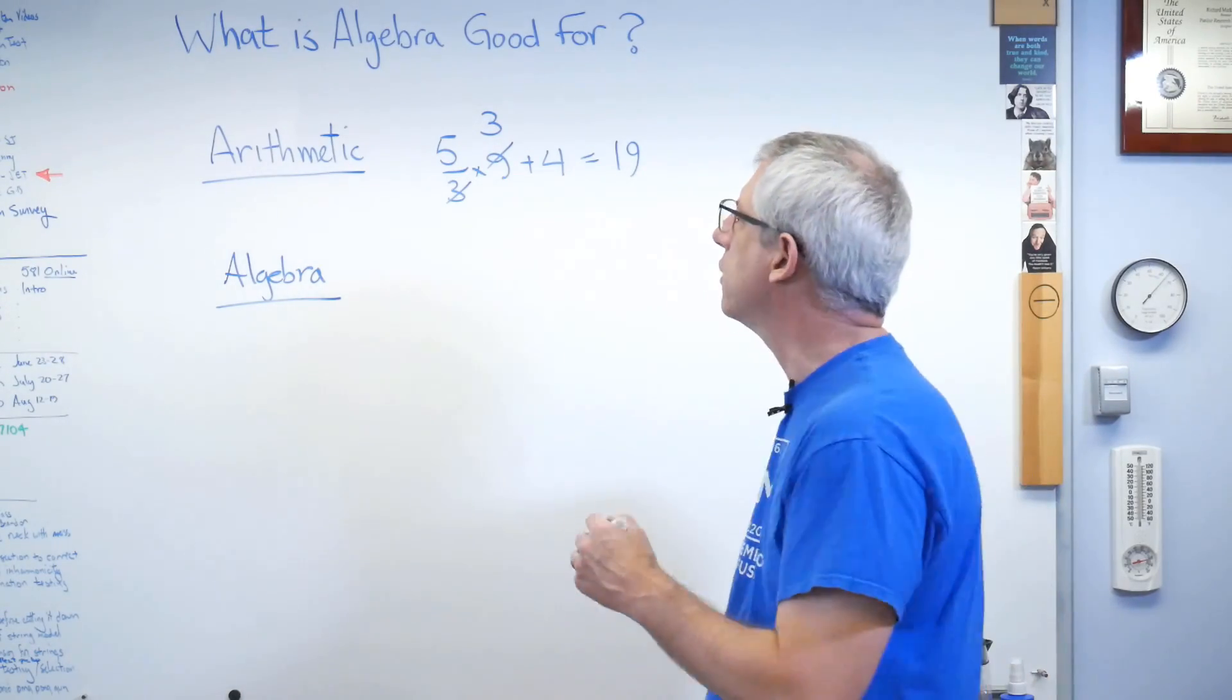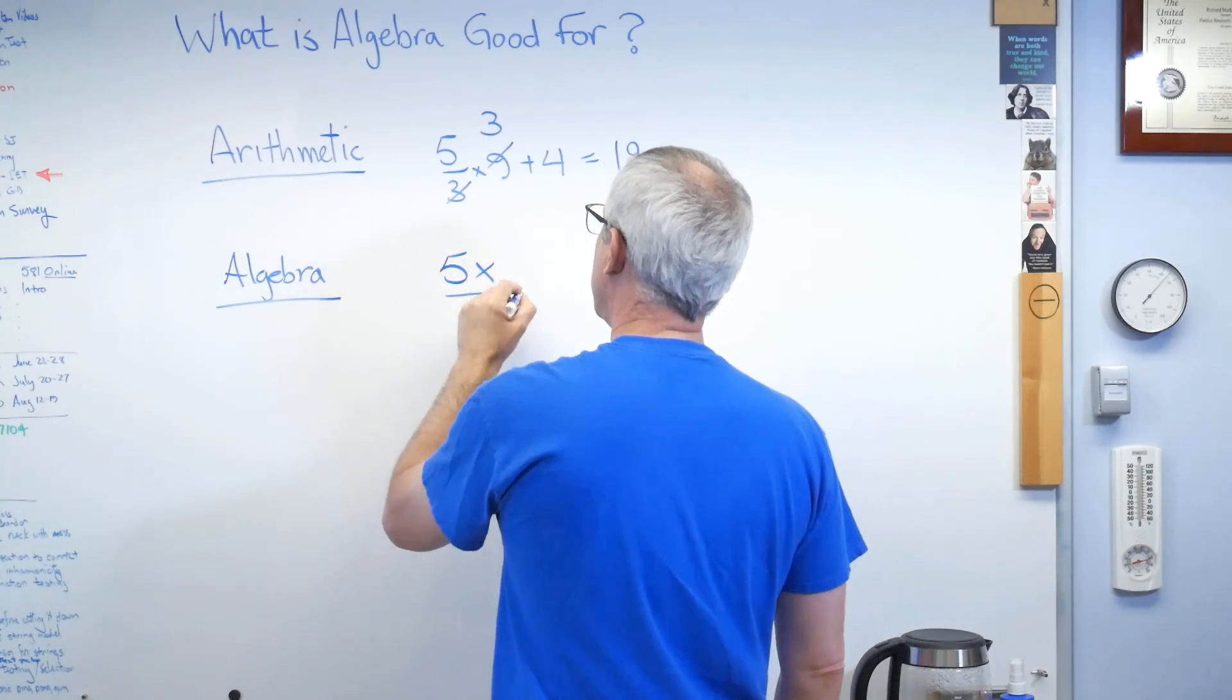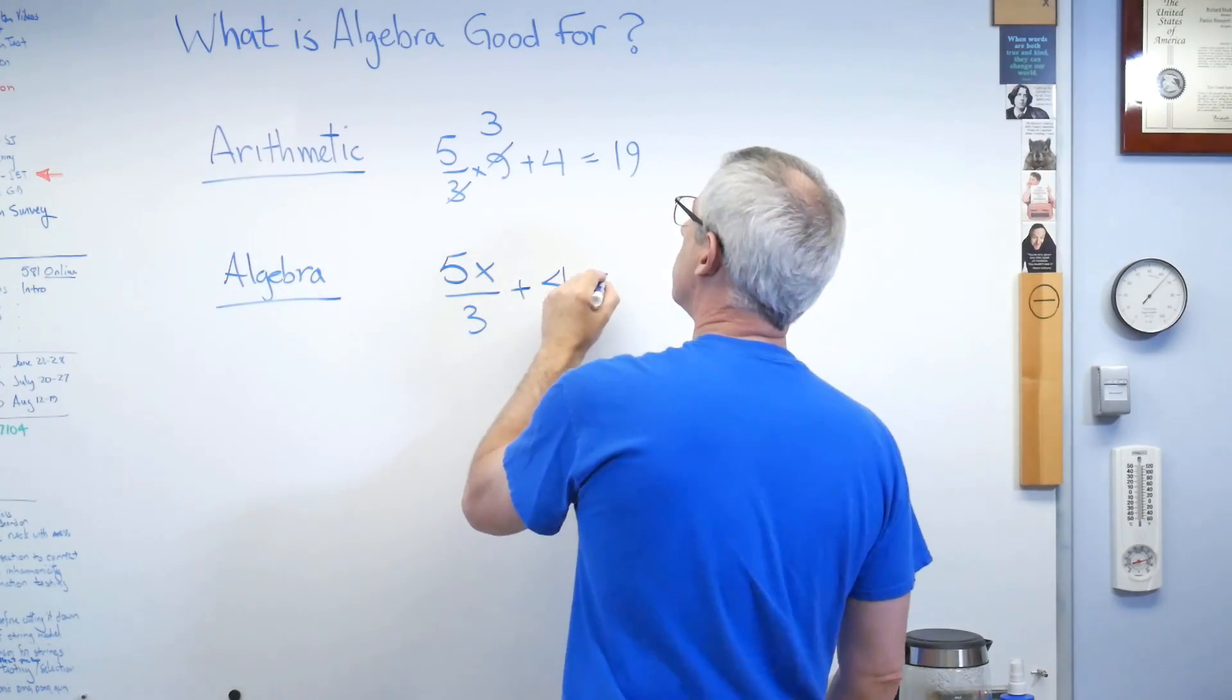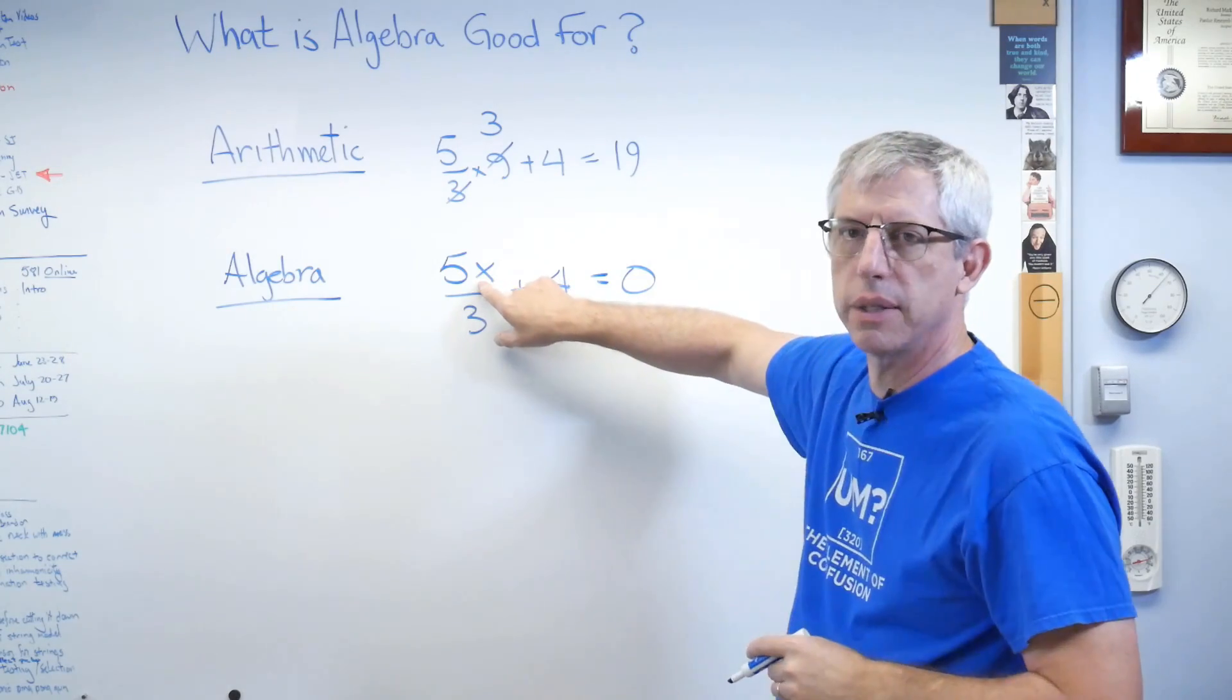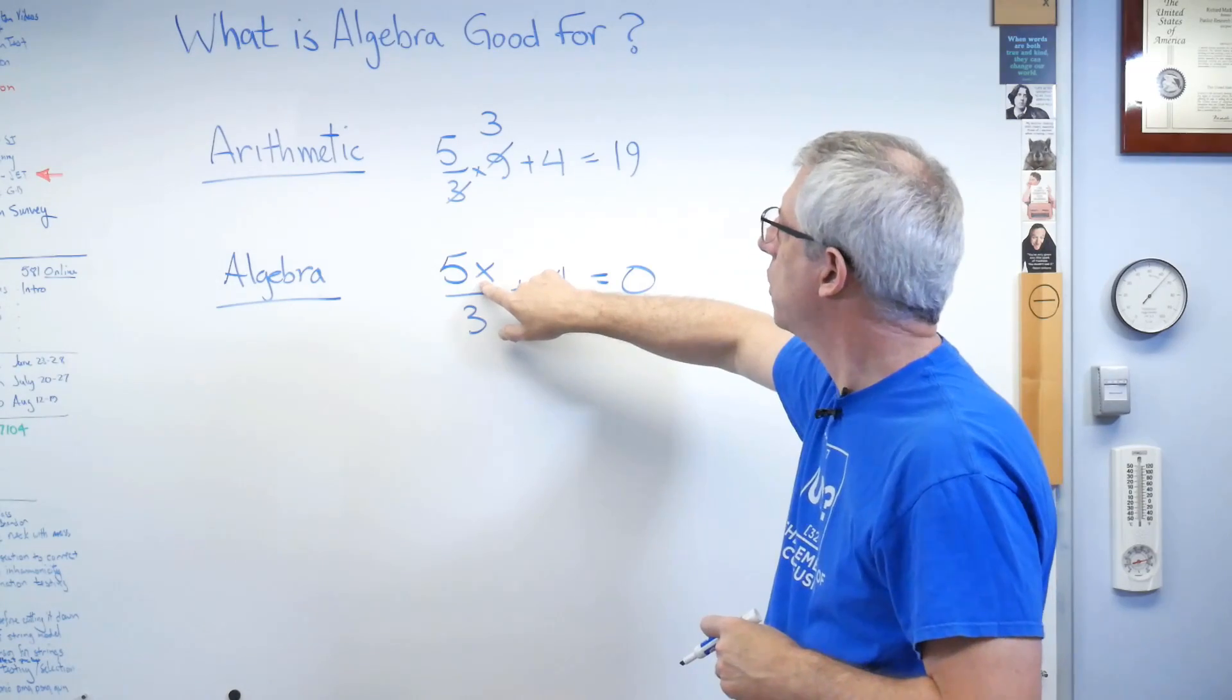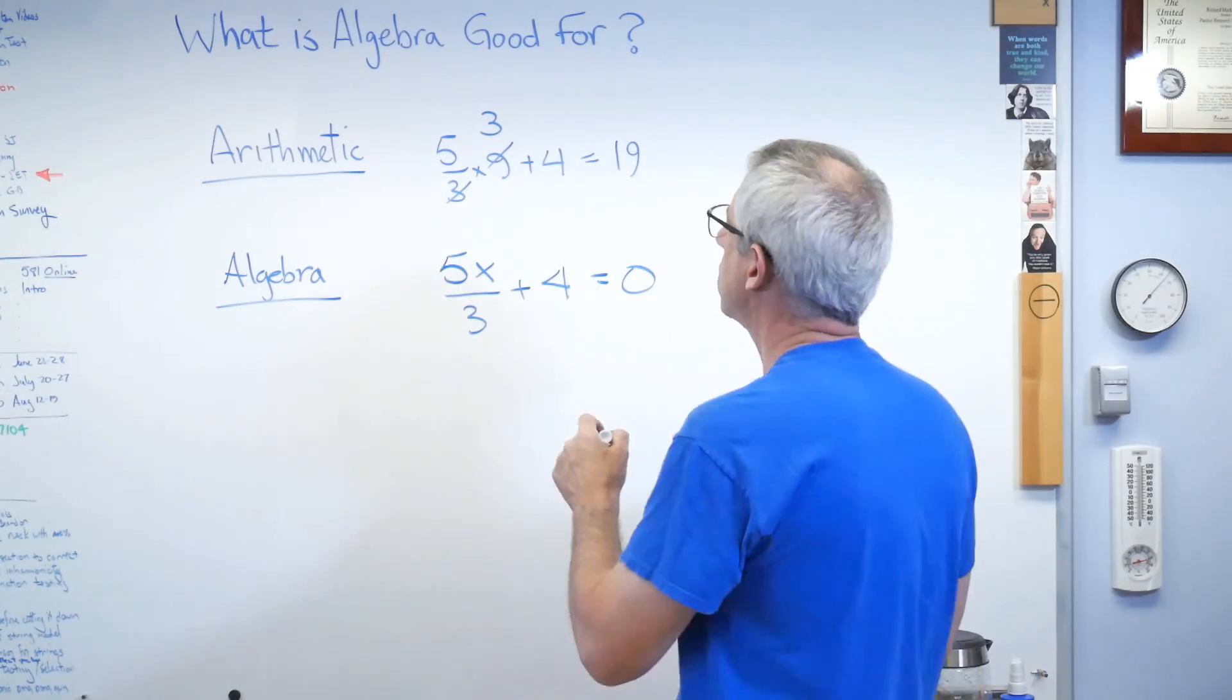Let's just stick with x for now. So if I say 5x over 3 plus, I don't know, 4 equals 0. Almost the same numbers here. I don't know what x is now. There's this number called x. I don't know what x is. So I'm just going to put x in there and I'll solve for it later. Alright. Well, let's solve for it. Subtract 4 from both sides.